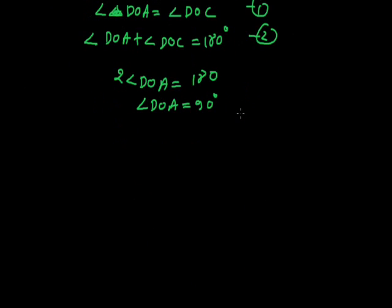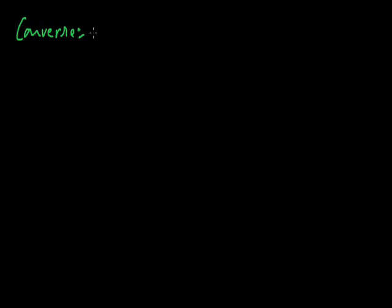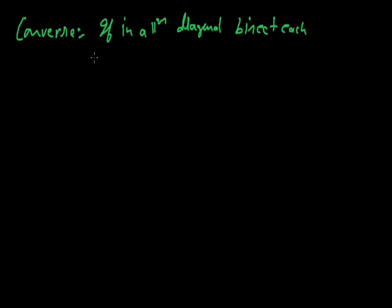So in rhombus, diagonals bisect each other at 90 degrees. Now let's see how we can prove the converse of this. The converse is: if in a parallelogram the diagonals bisect each other at 90 degrees, then it is a rhombus.